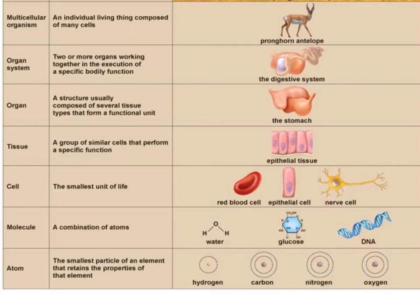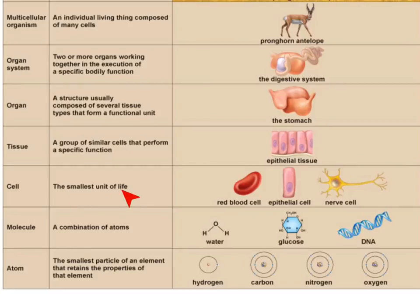I also want to talk about how living organisms and the systems they live in are organized. We start with the smallest level, which is an atom — not really a living thing, but living things are composed of atoms; it's the smallest particle of an element. Atoms combine to form molecules, such as DNA, glucose, and water. Molecules combine to form the cell, which is the smallest unit of life — the smallest thing we can actually call alive.